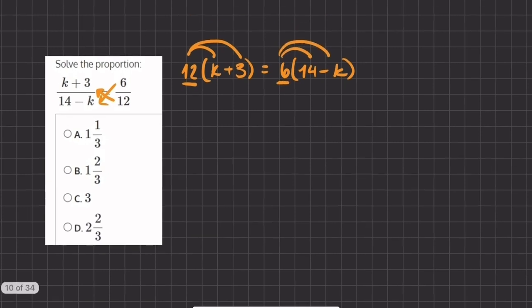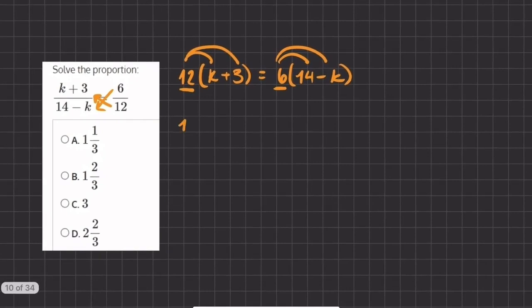When we distribute, we have 12 times k, which will give us 12k, and 12 times 3, which will give us 36, equals 6 times 14, which will give us 84, and 6 times negative k, which will give us negative 6k.